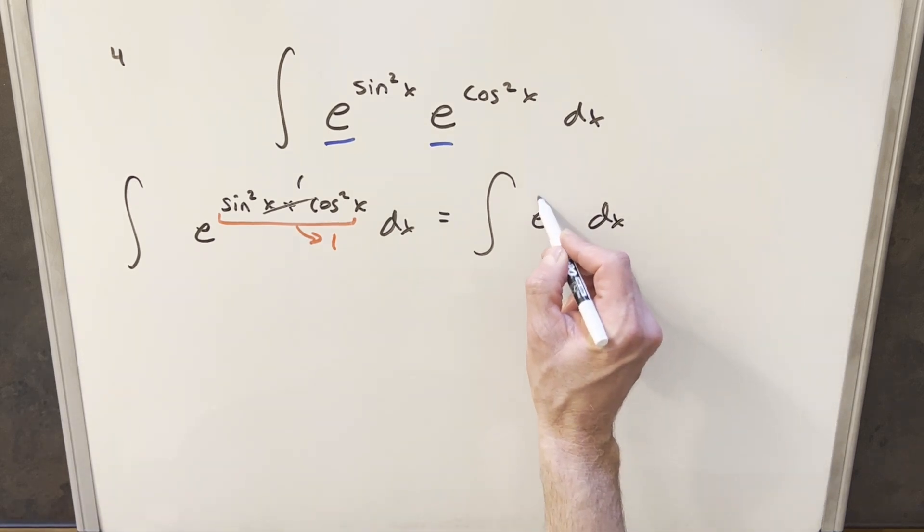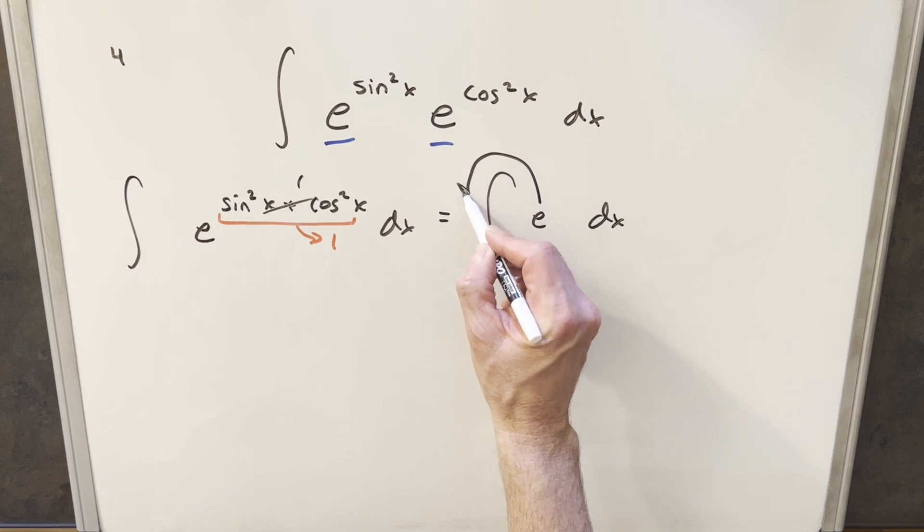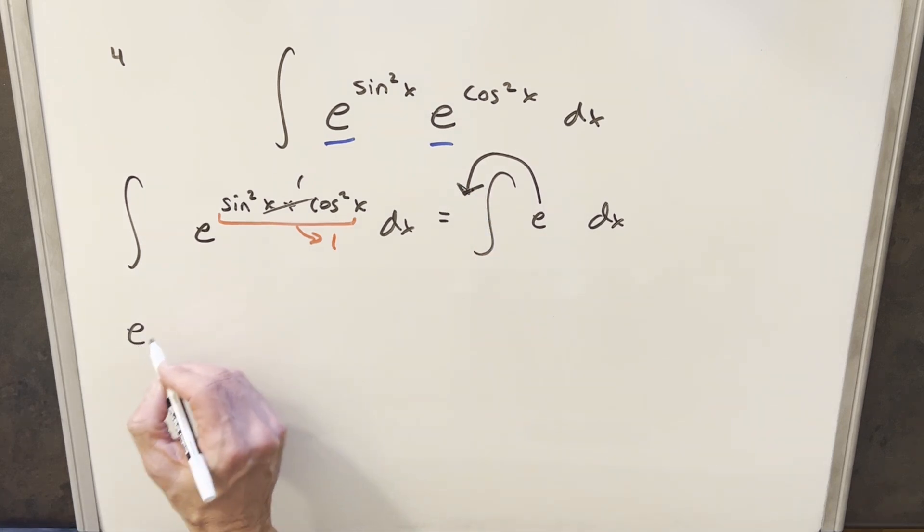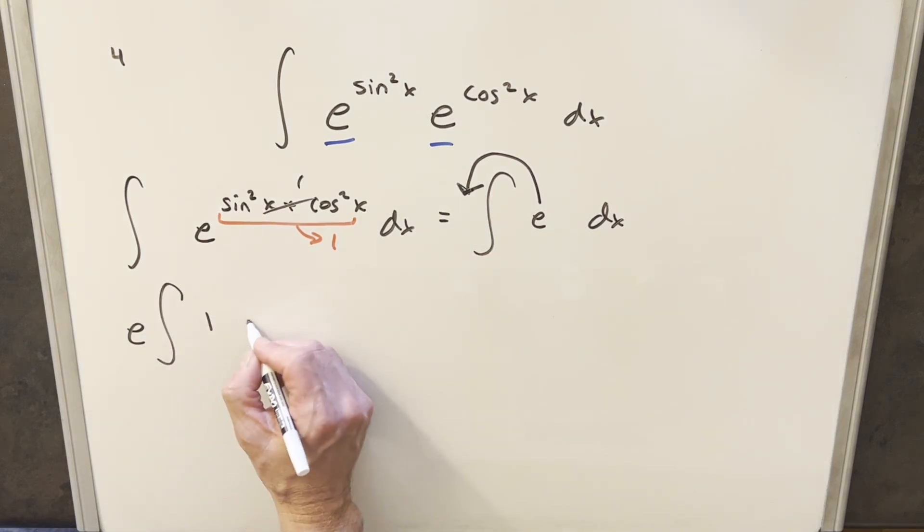But now to make it really clear, e is just a constant value. So what we'll do is we'll bring that up front of the integral. And so then doing that, we're just integrating one.